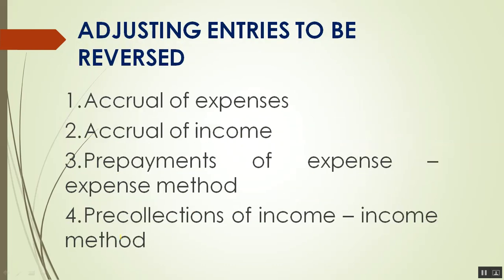What gets reversed: first, accrual of expenses; second, accrual of income; third, prepayment of expenses but only under the expense method. For prepayment under the asset method, it is NOT reversed. For pre-collection or unearned income under the income method, it IS reversed. Other than these — accruals and the expense/income methods — nothing else is reversed.